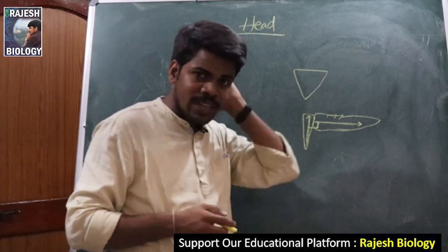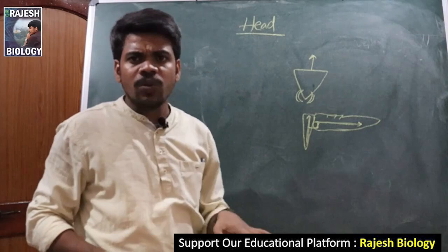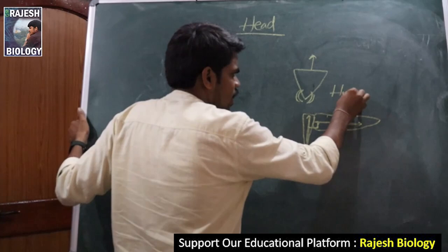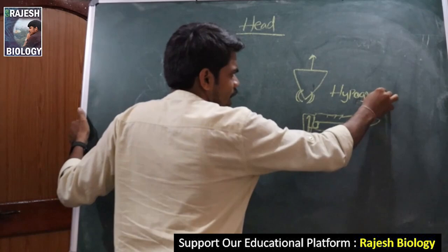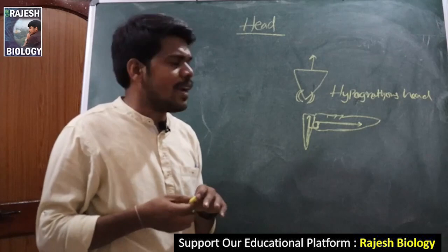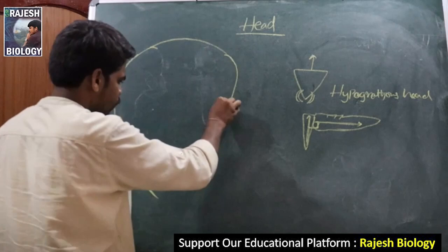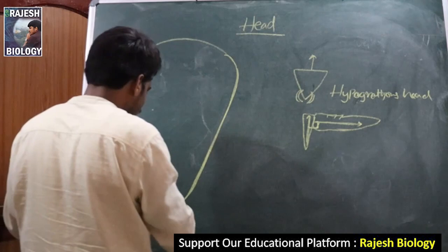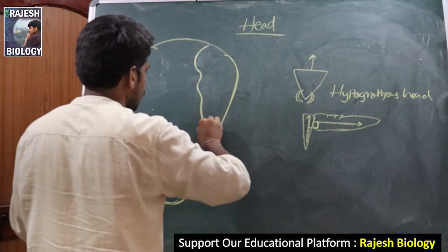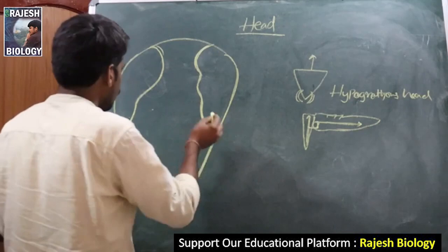Triangular in shape means the posterior, broader surface faces upward toward the sky, and all the mouth parts face downward toward the ground. This type of head is called a hypognathous head. If we draw the diagram of the hypognathous head, it has a broader surface at top and narrows below. The compound eyes — a pair of compound eyes — are located on the head.